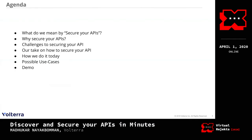This is the agenda for today's session. First, we'll cover what we mean by securing your APIs and why somebody has to secure their APIs. We'll also talk about the challenges when people decide to secure their APIs. Then we'll discuss our approach to securing APIs, walk through some diagrams explaining how we do it today, cover possible use cases, and finish with a live demo at the end.